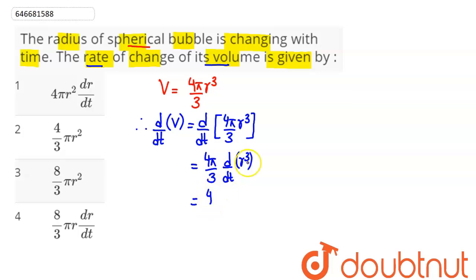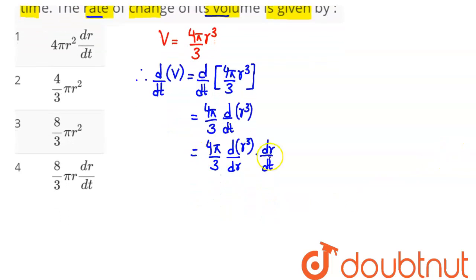Now as we can see here this is r and this is t. So applying chain rule to this, we have r cube differentiated with respect to r, multiplying and dividing with respect to dr.